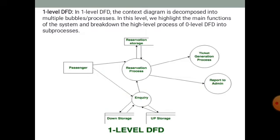1-level DFD: In a 1-level DFD, the context diagram is decomposed into multiple bubbles or processes. At this level we highlight the main functions of the system and break down the high-level process of 0-level DFD into sub-processes. We go deeper — one step lower than the 0-level DFD — to show the passenger's reservation process in detail, such as how a ticket is generated, and what notification the admin receives when a ticket booking request comes in.